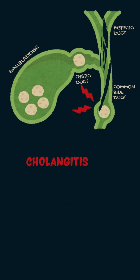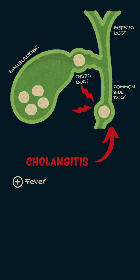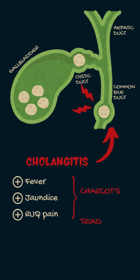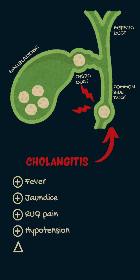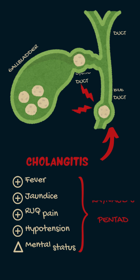Cholangitis is a serious infection of the bile ducts, usually caused by a blocked duct due to stones or other obstructions. Symptoms include fever, jaundice, and severe abdominal pain, known as Charcot's triad. It can be further complicated with hypotension and a change in mental status, known as Reynolds' pentad.